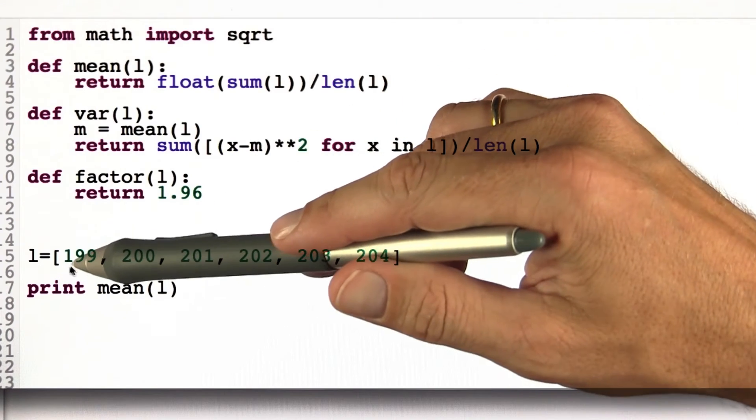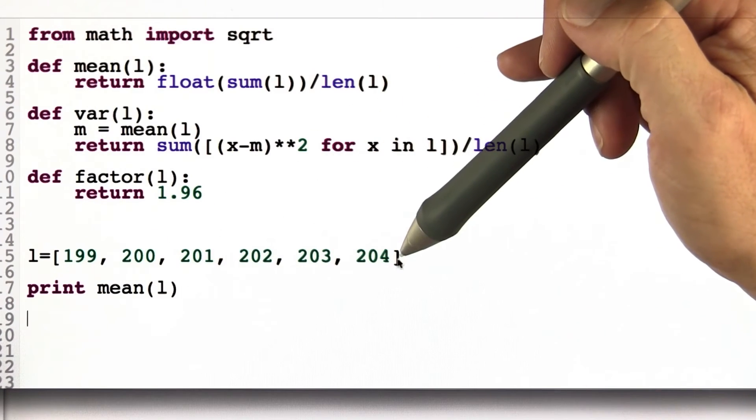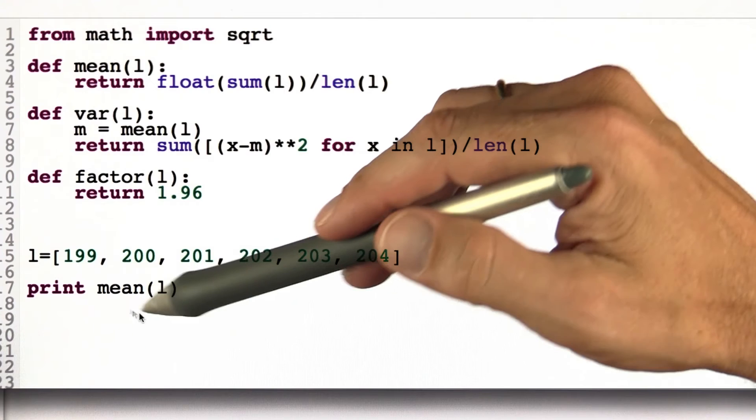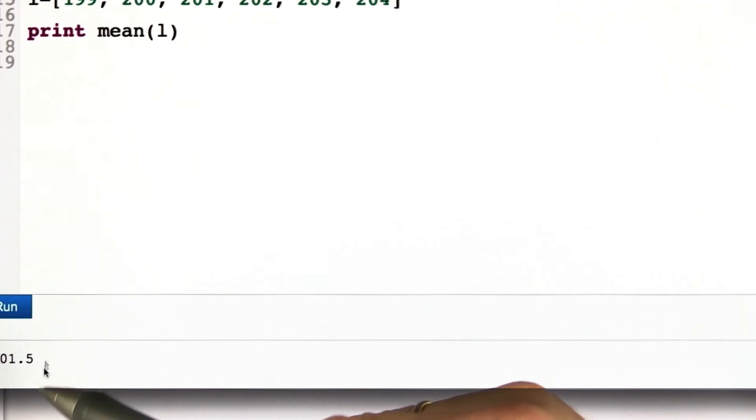And when I give you a list, this was the list of height in my basketball club, and I print the mean, then it's hard to see, but I should indeed get 201.5. Give it a try.